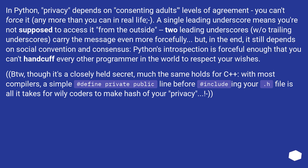By the way, though it's a closely held secret, much the same holds for C++. With most compilers, a simple hashtag define private public line before hashtag including your .h file is all it takes for wily coders to make hash of your privacy.